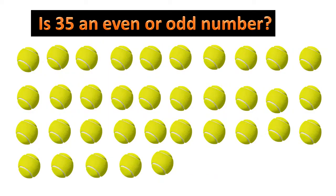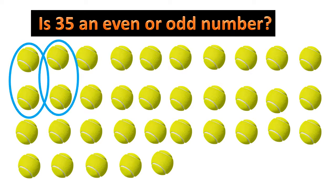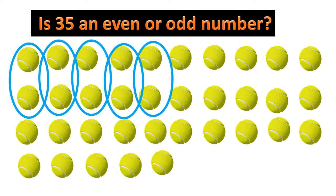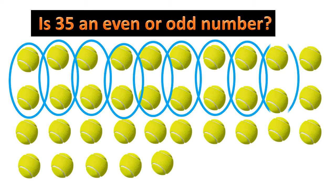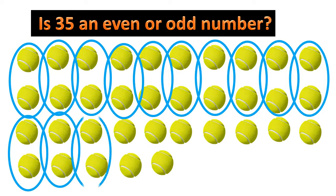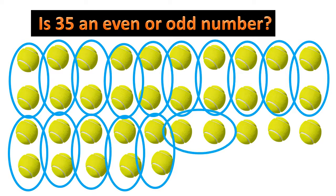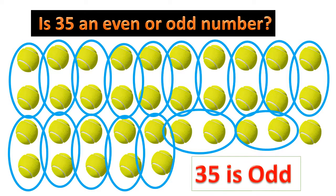Now, let me see that 35 is an even or odd number. So let's start to make the groups of twos with these 35 balls. We count 1, 2, 3, 4, 5, 6, 7, 8, 9, 10, 11, 12, 13, 14, 15, 16, 17 groups. Oh, I have one left over ball here. When we make the group of twos with 35 balls, we make 17 groups of twos and one ball is left over. So 35 is an odd number.